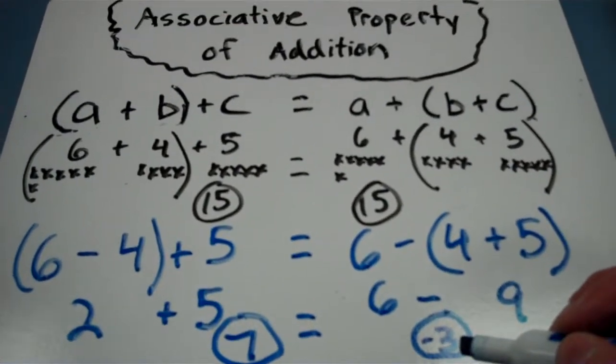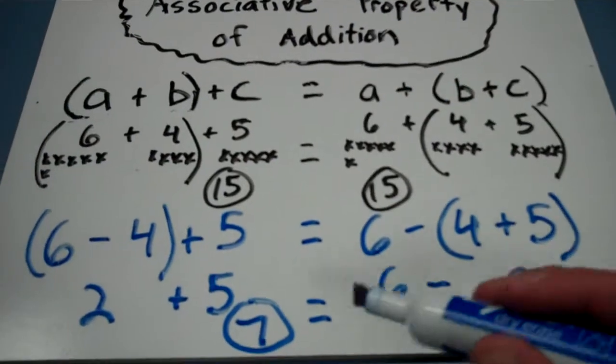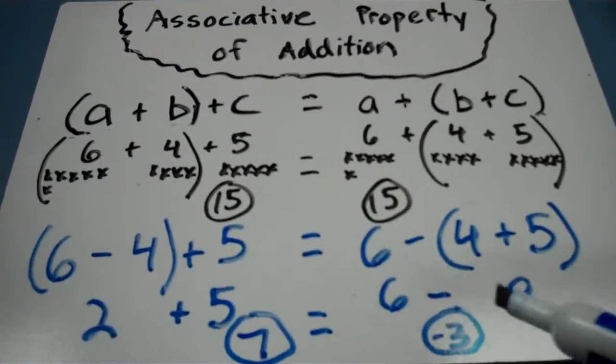And as you can see, when you try to apply the associative property to subtraction, it doesn't work. That's why they call it the associative property of addition.